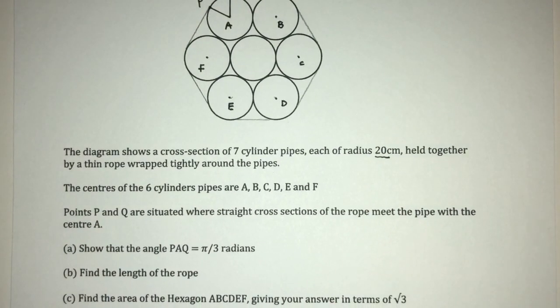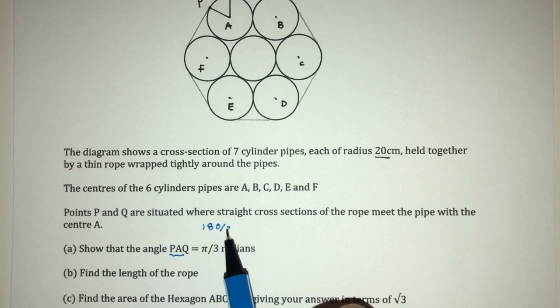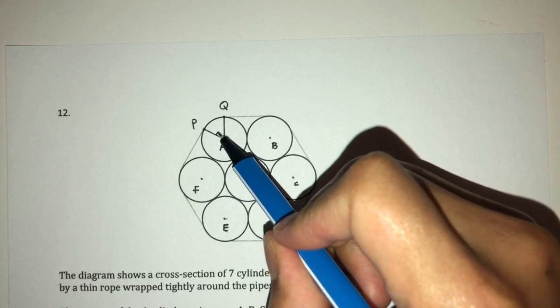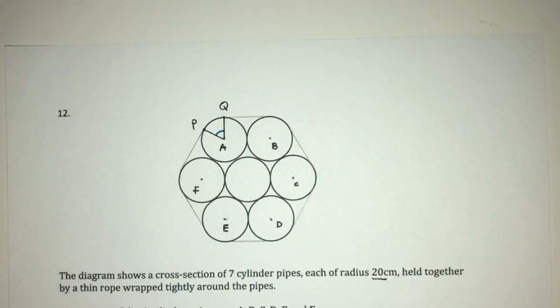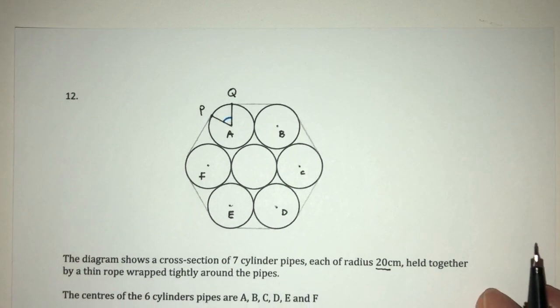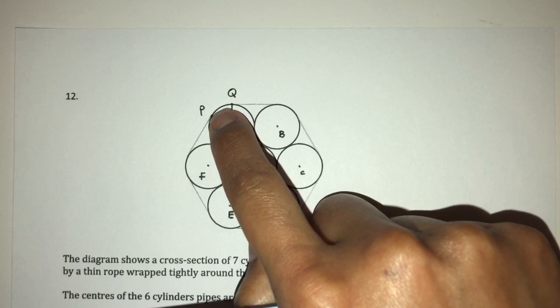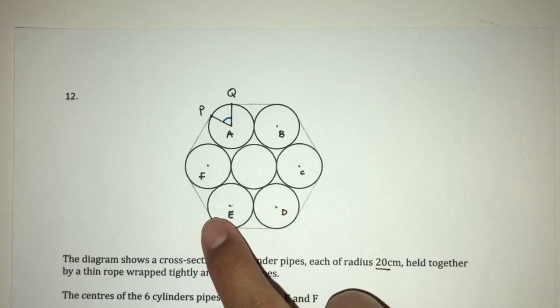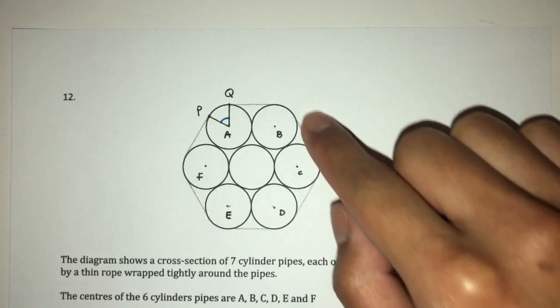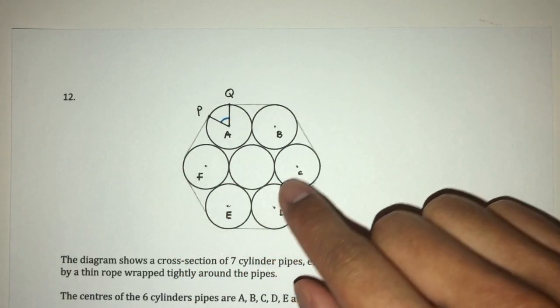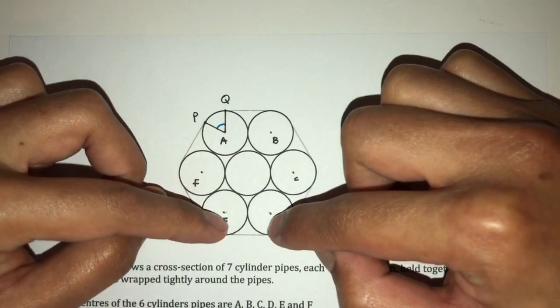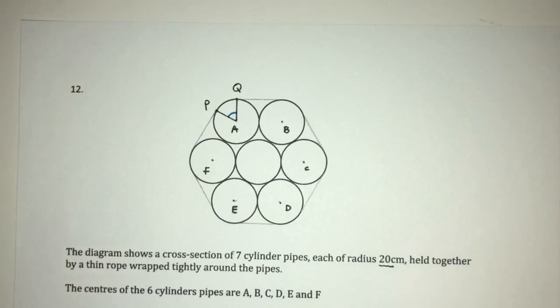We have to show the angle PAQ is π over 3 radians. Now we know π over 3 is 180 over 3, which is 60 degrees. So how are you going to show this? In this case, we can use observation. For example, if you count, we have one sector, two sector, three, four, five, and six. The idea is that because it is tightly wrapped around this circle in the center, if you cut these pieces, these sectors, and join them, they will form a complete circle. So, that's the main idea here.